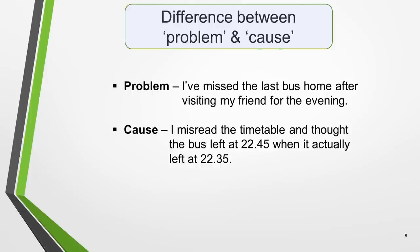Before we move on to some common mistakes, I want to quickly explain the difference between a problem and a cause. Here's an example of each. First the problem: I've missed my last bus home after visiting my friend for the evening. Now the cause of the problem: I misread the timetable and thought the bus left at 22.45 when it actually left at 22.35. The cause is the reason for the problem.